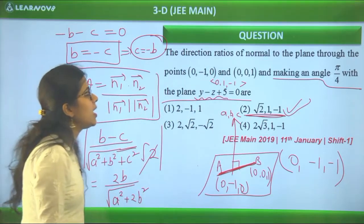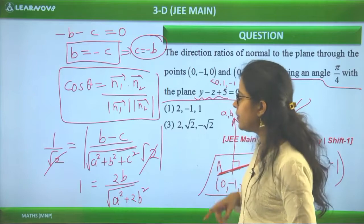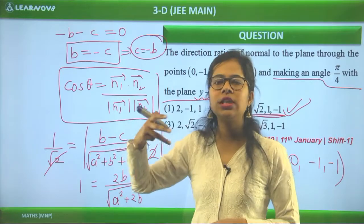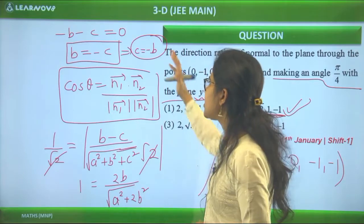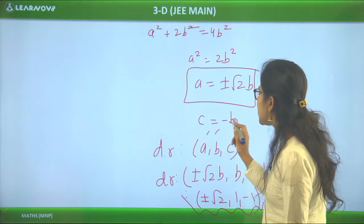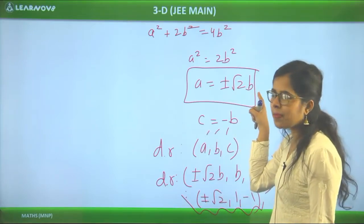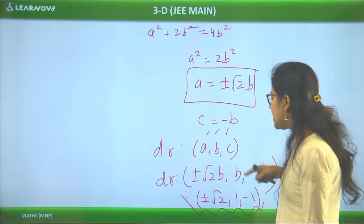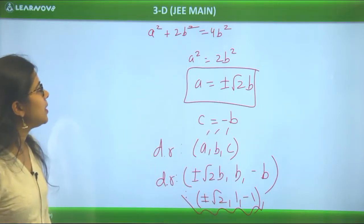So here we found the normal vector's direction ratios using the given conditions. To find A, B, C, you don't need three relations — just two relations are sufficient because you only need the ratio. We expressed A and C in terms of B, then B cancels out, giving us the direction ratio set. Two relations are always sufficient for finding direction ratios.